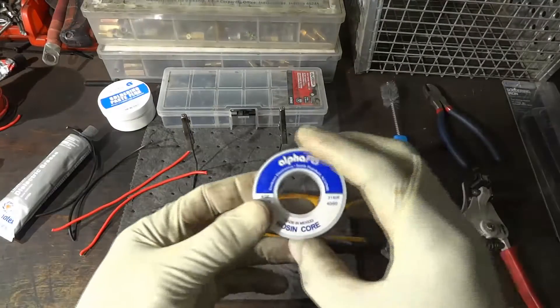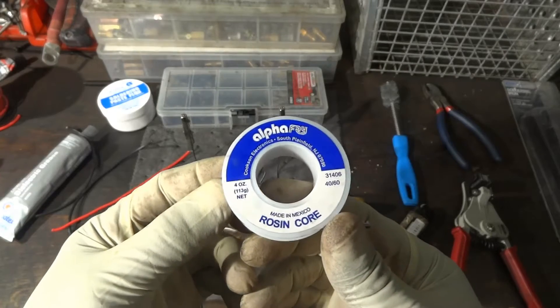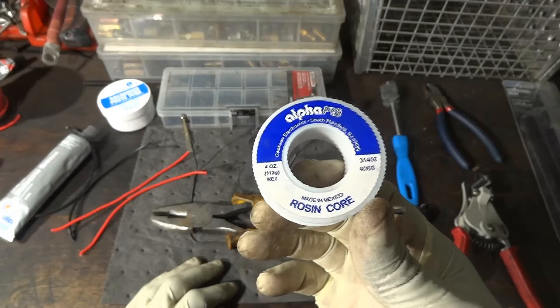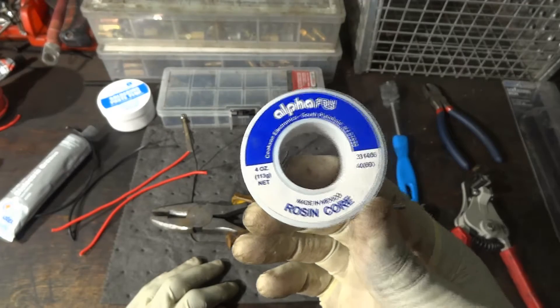This is the type of solder we're going to use today. We are using the rosin core. I like it because it has a low melting point and it also protects the wire against oxidation.